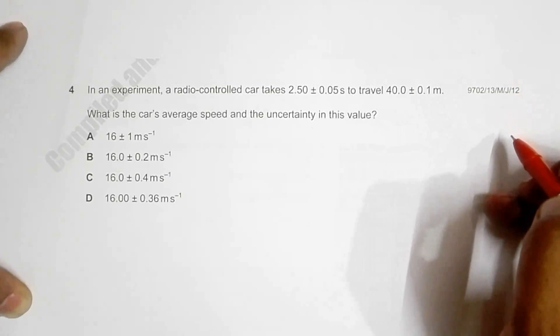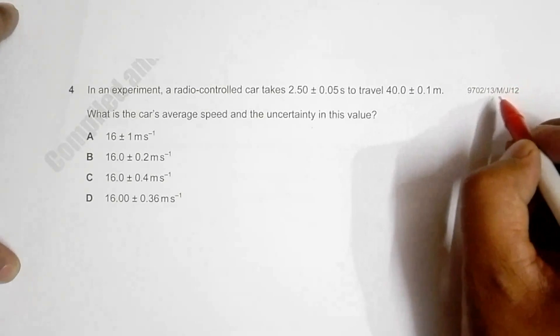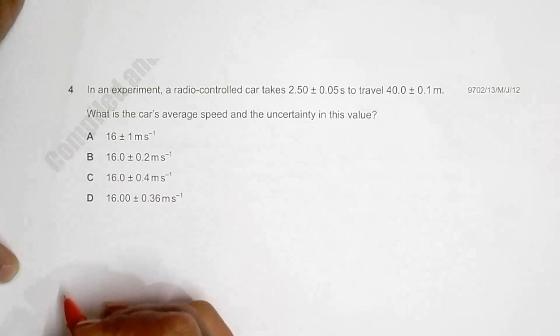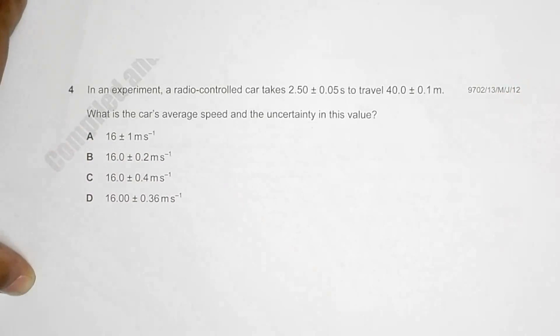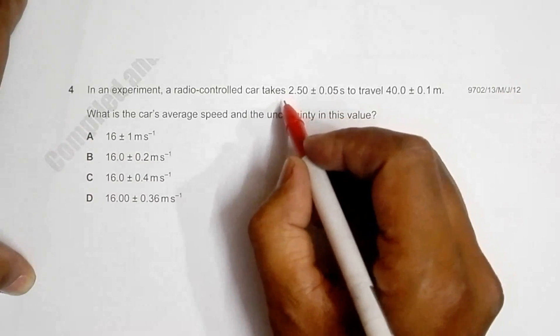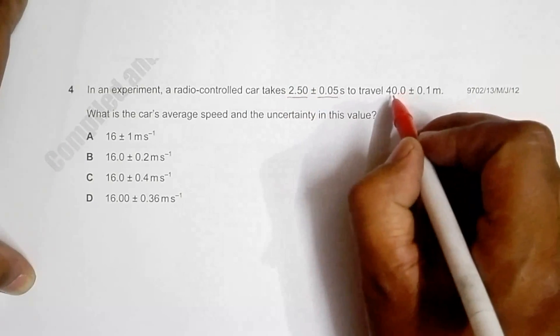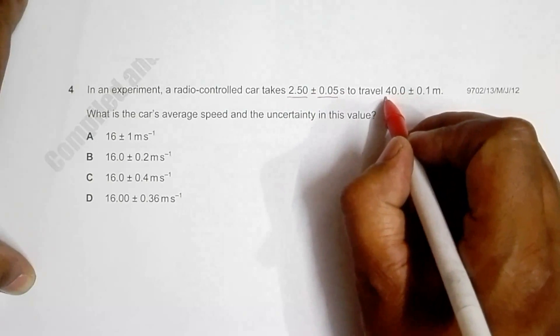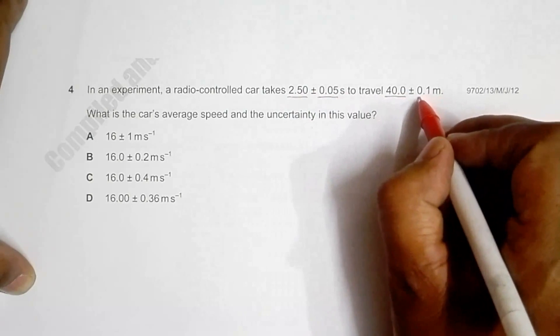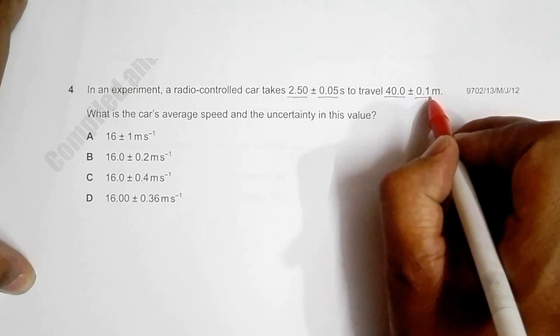This is the question from 2012 May-June paper 13, question number 4. We have a radio-controlled car which takes 2.50 ± 0.05 seconds to travel 40.0 ± 0.1 meters.